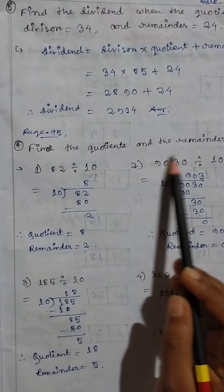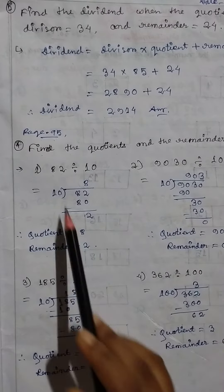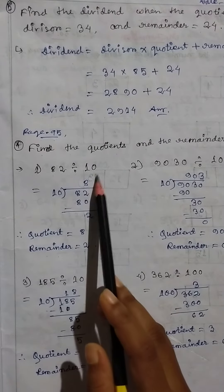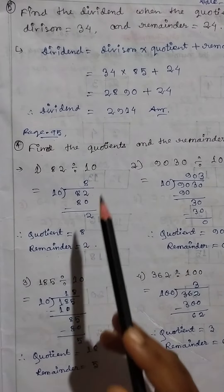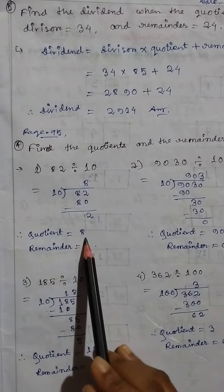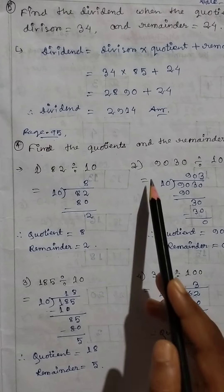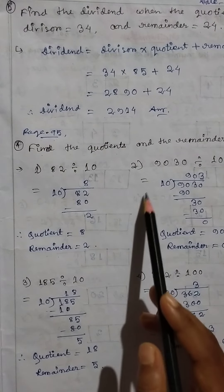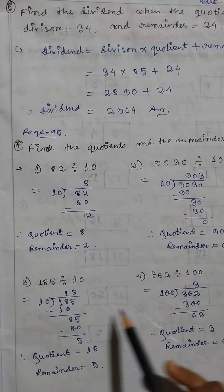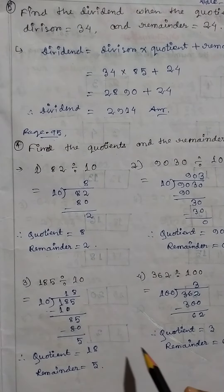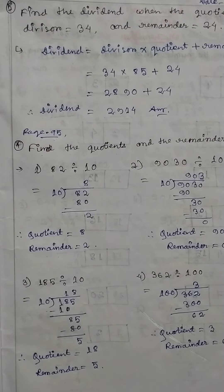Then, page 95: find the quotients and remainders. 82 divided by 10 gives quotient 8 and remainder 2. Do the same for problems 2, 3, and 4 on your own. Thank you, bye.